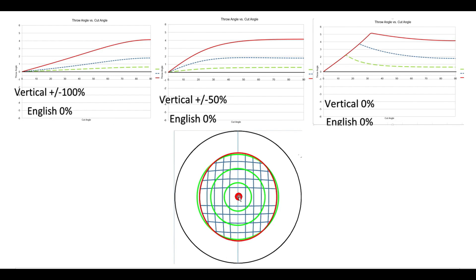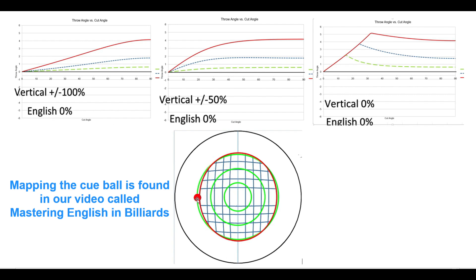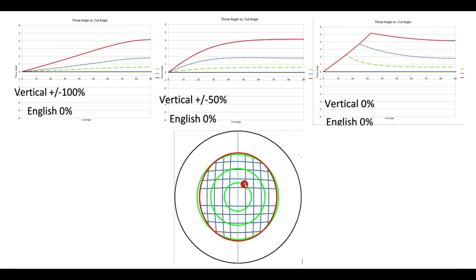The diagram of the cue ball shows tips of spin as green circles, percentage of spin as blue lines, and the miscue limit as the red circle. One tip of spin equals half the diameter of the tip, with the green circles showing 1, 2, and 3 tips of spin. The blue lines represent 25% increments — 25, 50, 75, and 100% from center in all directions. The mathematics of throw is done in percentage of spin, not tips, though you can use the diagram to convert to tips if you prefer.